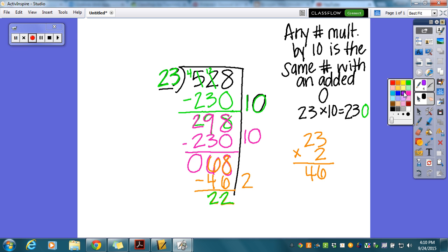And I'm going to add all of my partial quotients together. 10 plus 10 plus 2. That's going to give me an answer of 22. The remaining is going to be my remainder. So my answer is 22 remainder 22.